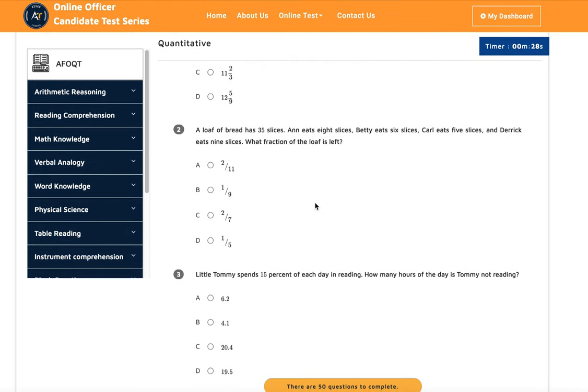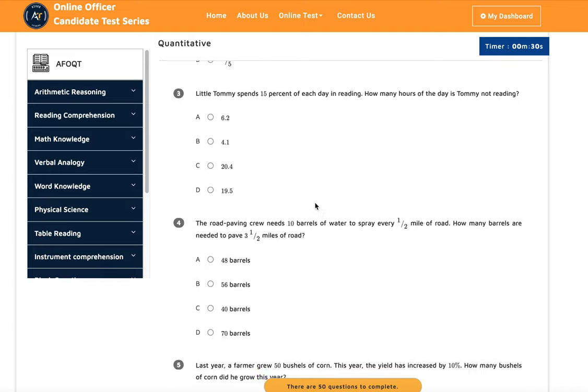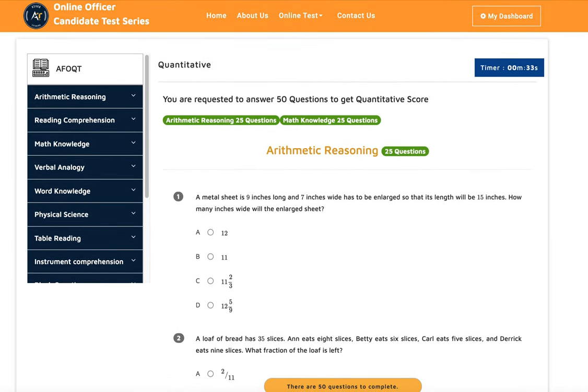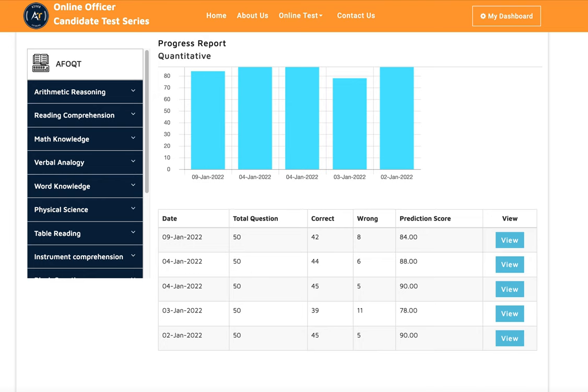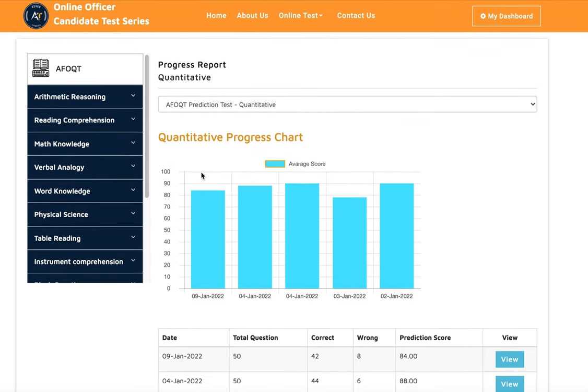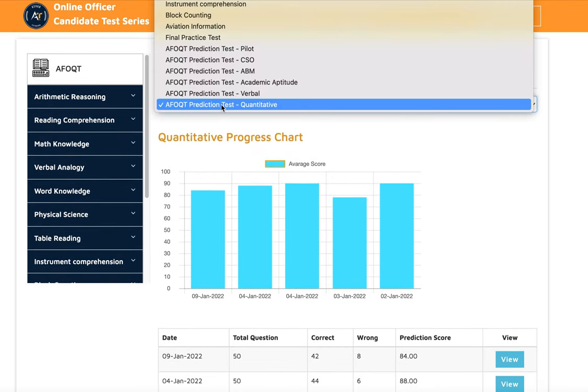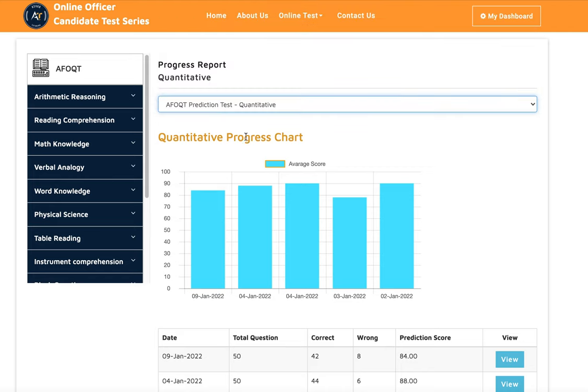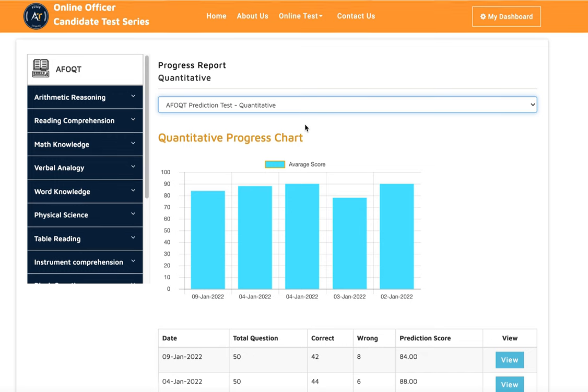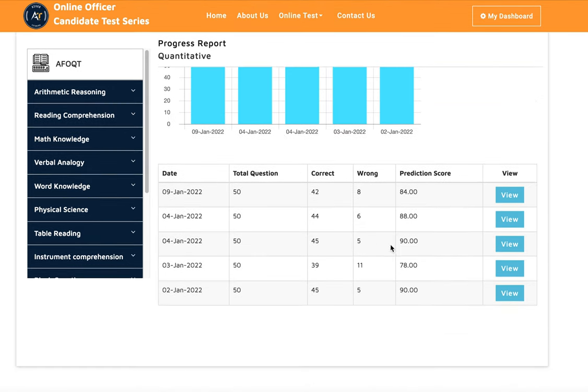Let's look at one of our students who took the test in each subset and see how she did. You can see here this is one of our students who took the test in different categories. This is her quantitative score. She took multiple tests and got scores of 84, 88, 90, 78, and 90.